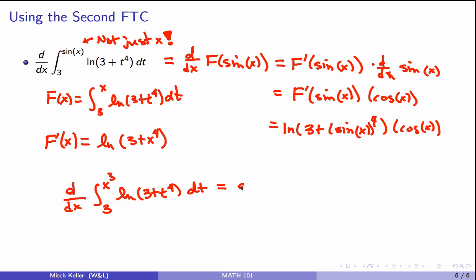A little bit of work—you're just saying the same thing. This is just saying what's the derivative with respect to x of big F of x cubed, which we know is F prime of x cubed times 3x squared, the derivative of the inside guy. So that is natural log of 3 plus x cubed to the fourth times 3x squared.